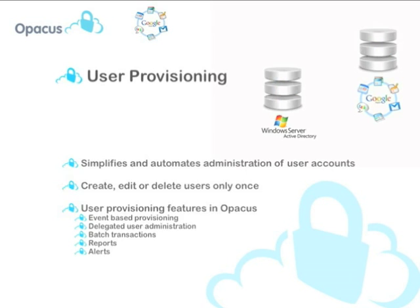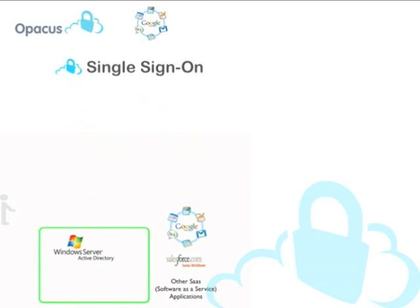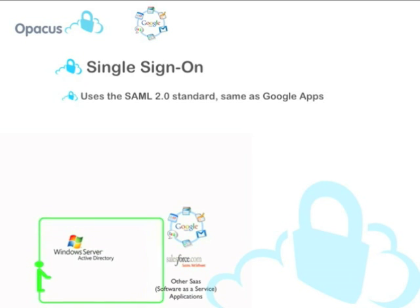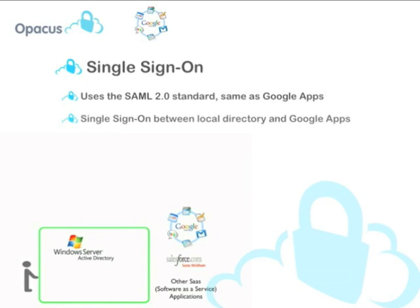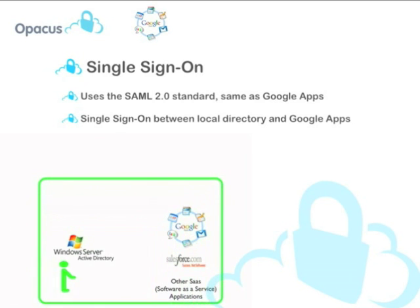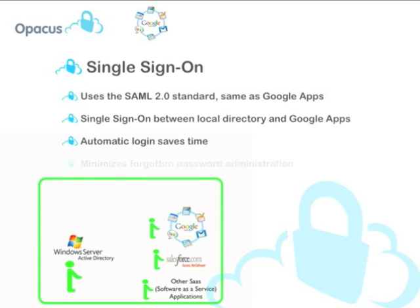Let's move on to the second benefit of Opicus: the single sign-on functionality. Using the built-in SAML support, users can authenticate with any of the supported authentication methods and be automatically logged in to any service that supports the SAML single sign-on standard. Users already logged in to our local Windows Active Directory can be automatically signed on to services supported by the SAML SSO standard, such as Google Apps. No additional login will be required. This saves time by avoiding unnecessary login procedures and the risk of forgetting your password.